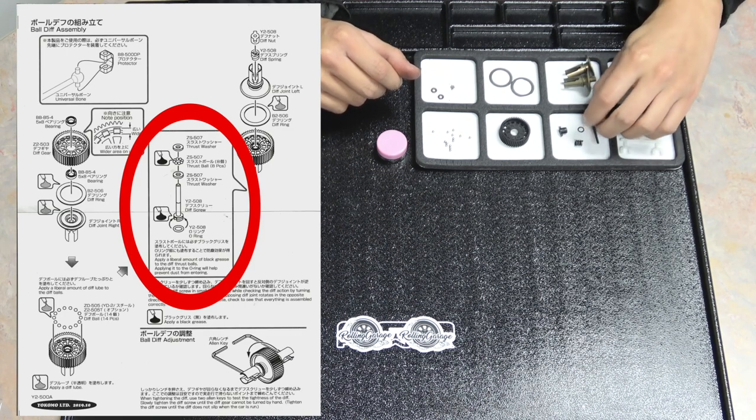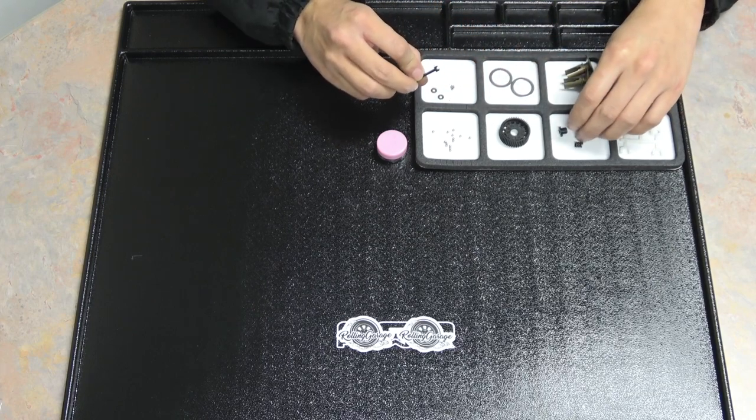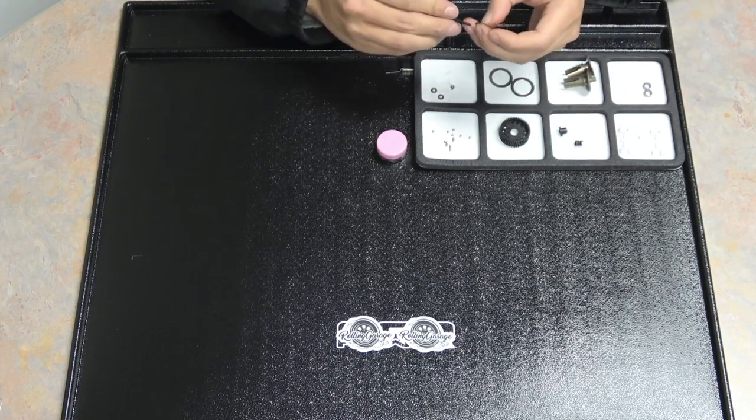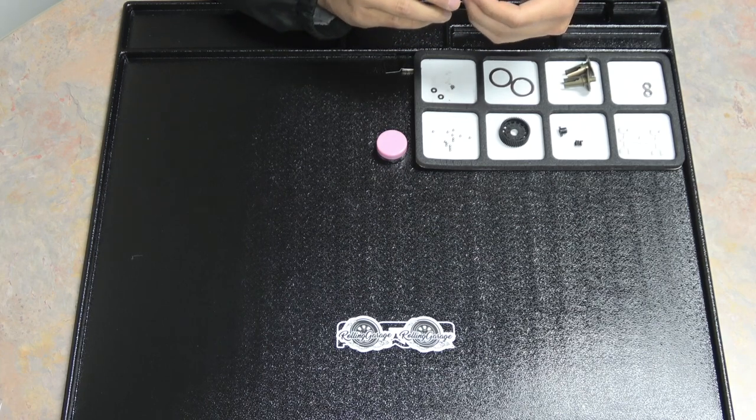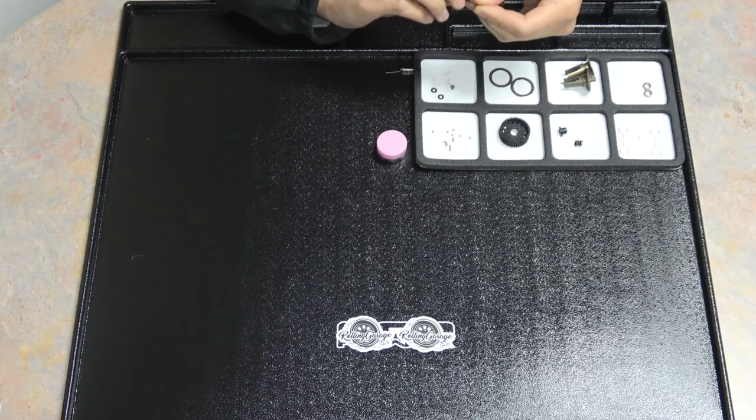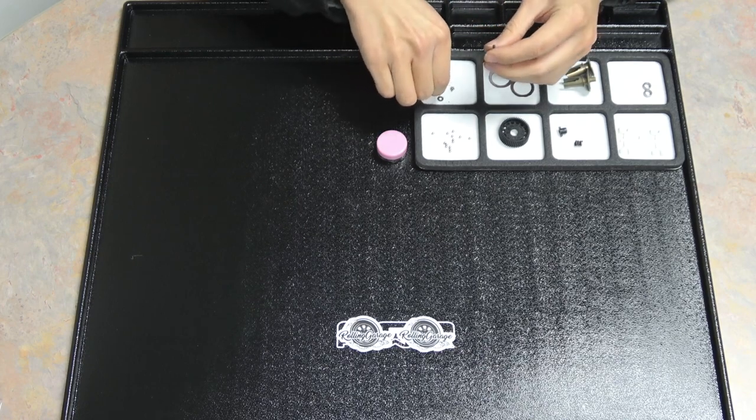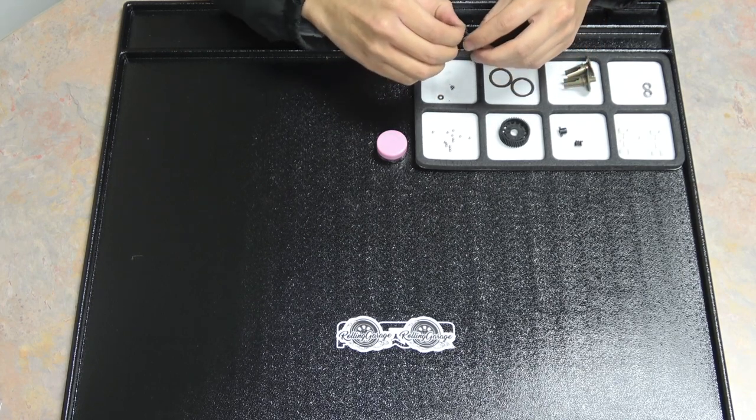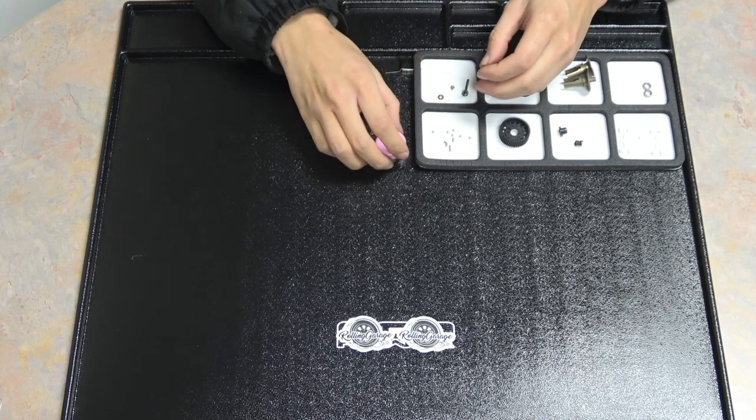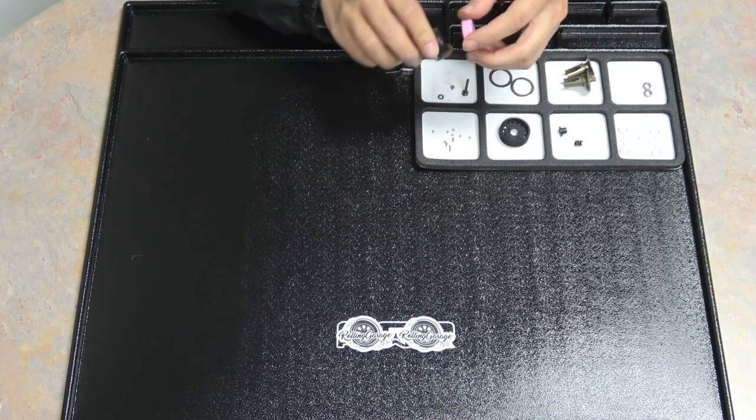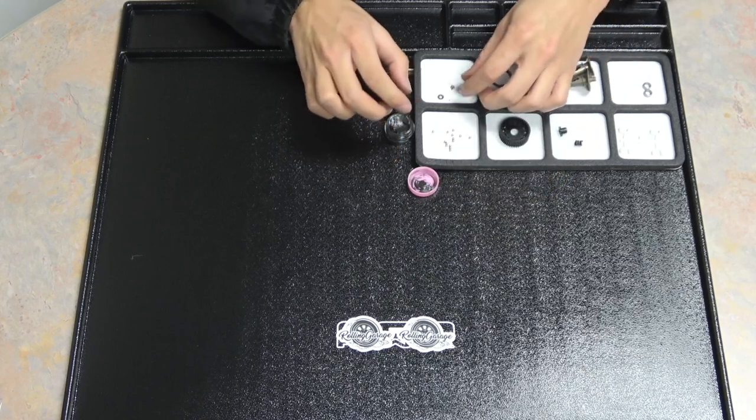I'm going to start by sliding this o-ring on the screw, as per the Yokomo instructions. And then the first washer over the bolt. Then I'm going to take a bit of the black grease and smear some on the washer to hold the balls in place.